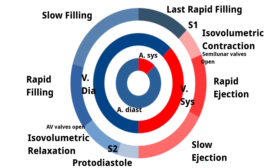At the end of isovolumetric relaxation, ventricular pressure becomes less than that of the atria, the AV valves open up, and the ventricles are rapidly filled at the beginning followed by slow filling at the end. At the end of the slow filling phase, there is a last rapid filling phase. This last rapid filling occurs because of atrial systole at the end of ventricular diastole, where the remaining blood in the atria is poured into the ventricles. We can compare these phases to the murmur of mitral stenosis, which is a mid-diastolic murmur with an opening snap and presystolic accentuation.